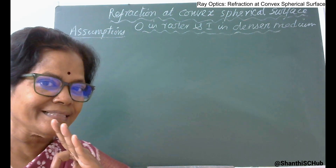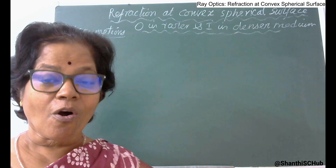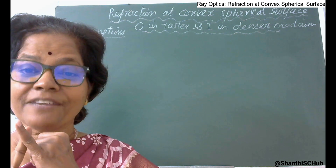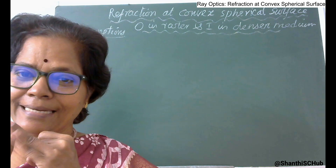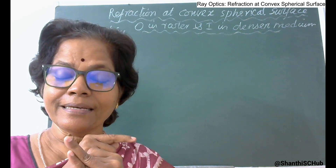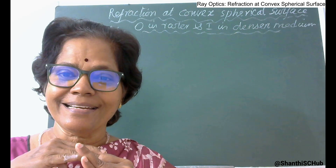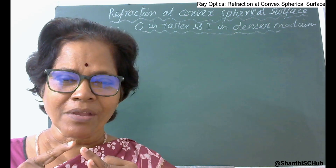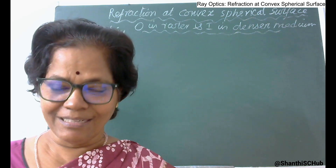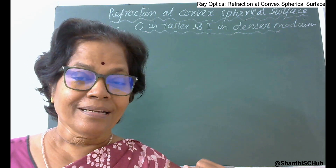These angles are all very small because the surface is of small aperture. Now for the Cartesian sign convention: all distances are measured from the pole of the refracting surface. Distances measured in the same direction as the incident ray are taken as positive; distances measured in the opposite direction of the incident ray are taken as negative.